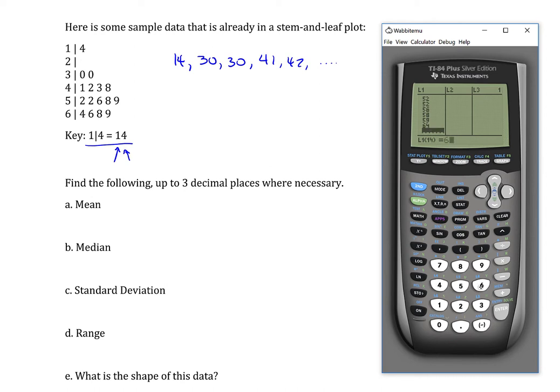Alright, that's 64, 66, 68, and 69. Now all of my data is in, and in order to find the mean, median, and the standard deviation, I'm going to use a function called one-var stats.